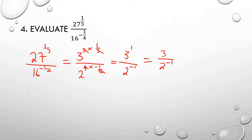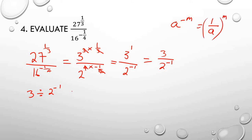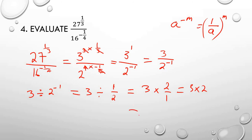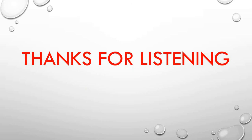When you have a negative power, you take the reciprocal. So 3 over 2 to the power minus 1 is the same as 1 over (3/2), which means we take the reciprocal: 3 divided by 1 over 2 becomes 3 times 2 over 1, which is 3 times 2, giving us 6. So the result is 6. That's it for today — thanks so much for listening and God bless you, bye bye.